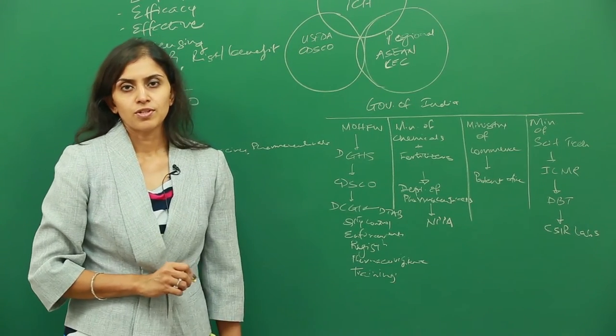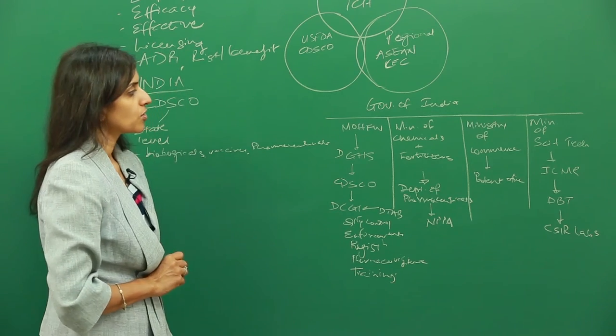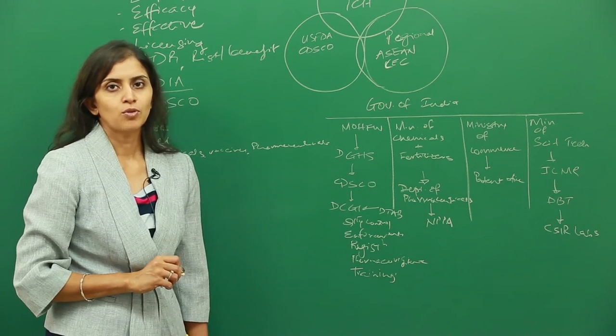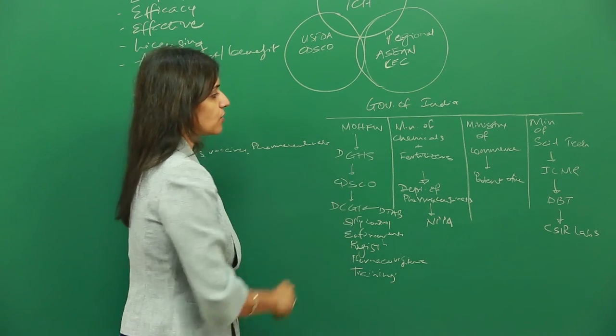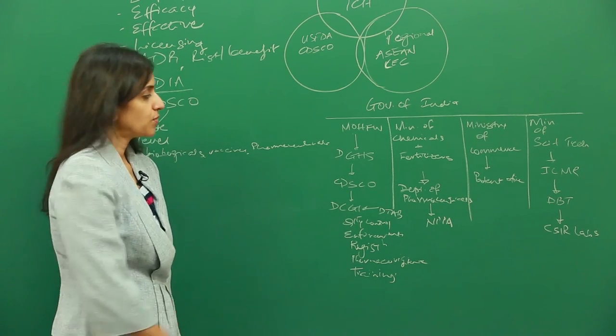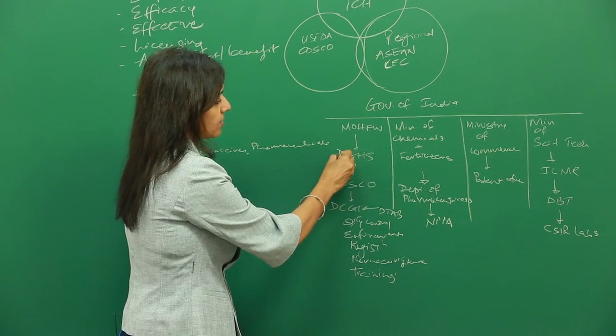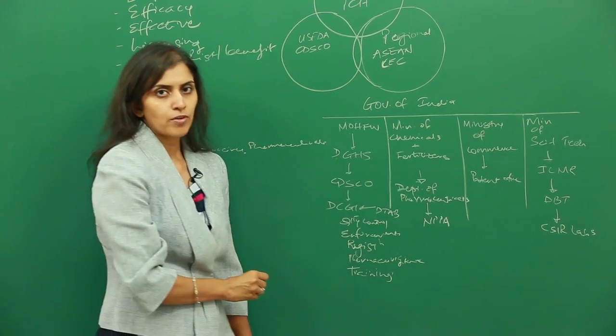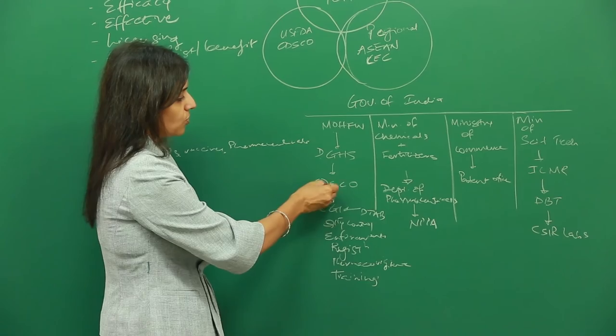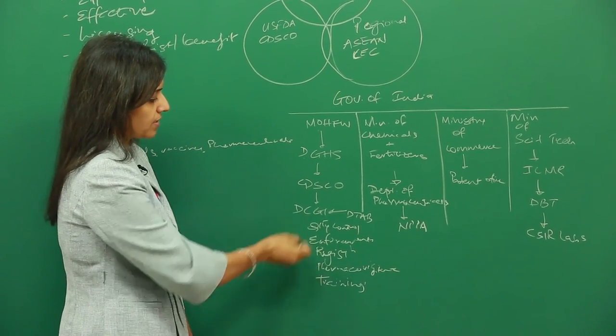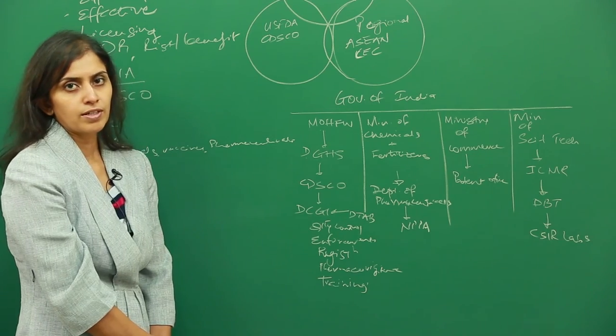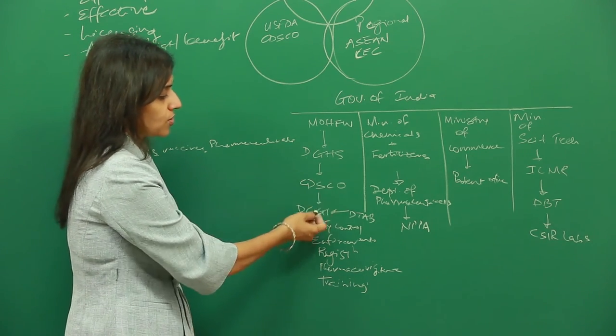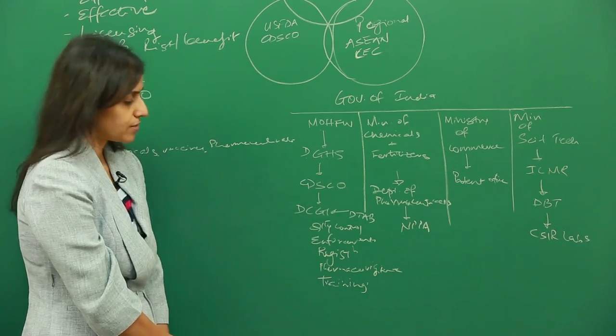The government of India has a very well-defined structure when it comes to regulations. There are four particular ministries involved with health regulations. Specifically, there's the Ministry of Health and Family Welfare, which has the Directorate of General Health Services (DGHS) under it. CDSCO falls under DGHS, and the DCGI, or Drug Controller General of India, falls under CDSCO.